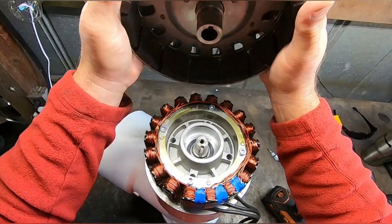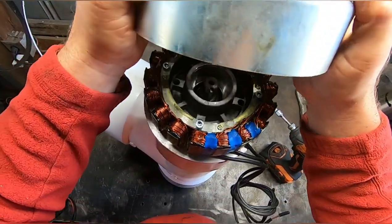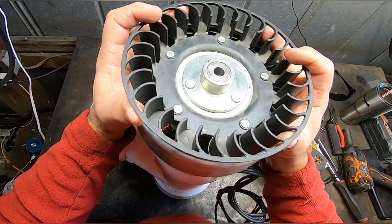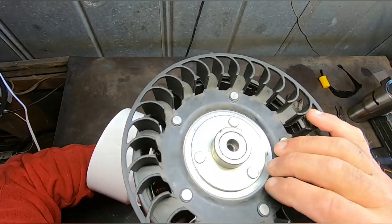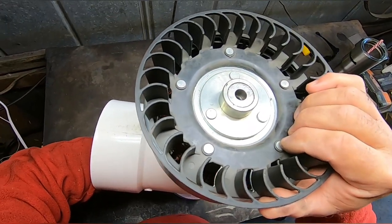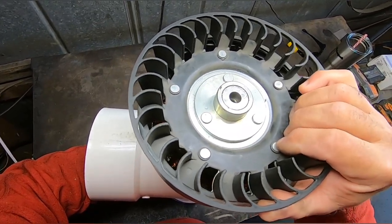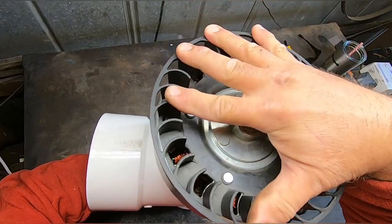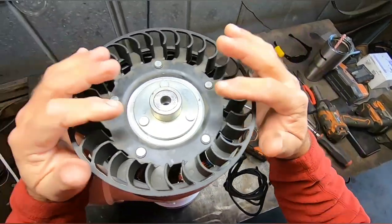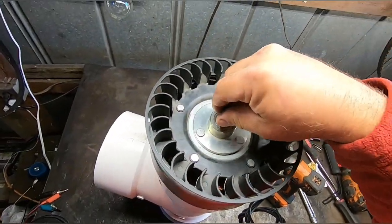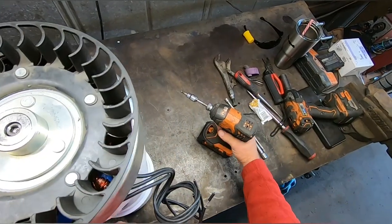These magnets will pull on it pretty good. I'll stick my hand inside here and hold the shaft while I get the keyway lined up. I think that's it there. Then we'll put the retaining bolt in.